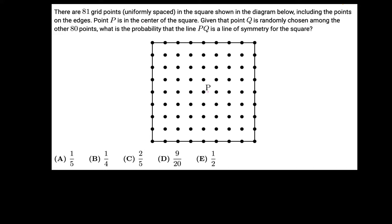Point P is in the center of the square. Given that point Q is randomly chosen among the other 80 points, what is the probability that line PQ is a line of symmetry for the square?